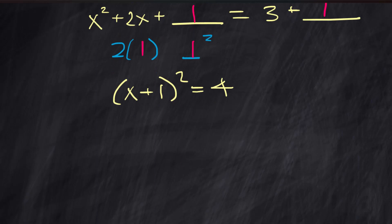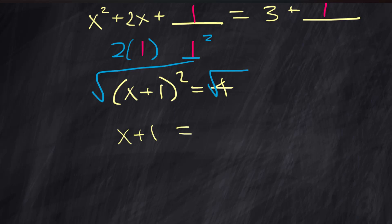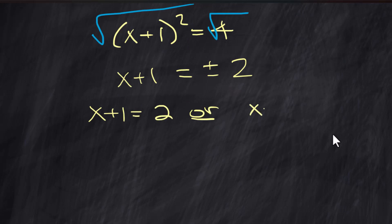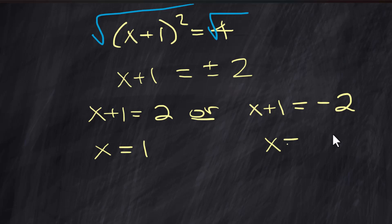Now take the square root of both sides. The square root of (x + 1)² is just x + 1, and the square root of 4 gives plus or minus 2. So x + 1 = 2 or x + 1 = −2, meaning x = 1 or x = −3. Those are the two solutions.